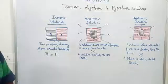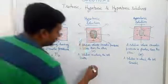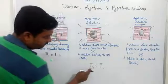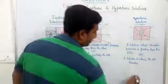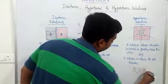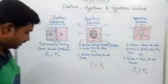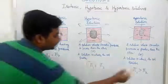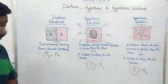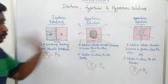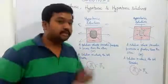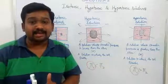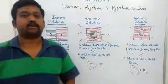To summarize: isotonic means π₁ equals π₂; hypotonic means π₁ is lower than π₂; and hypertonic means π₁ is greater than π₂. In all three cases, the reference is solution 1 (π₁). With respect to hypo, the other solution will be hyper, and with respect to hyper, the other solution will be hypo. So hypo and hyper are relative concepts — this we have to keep in mind.